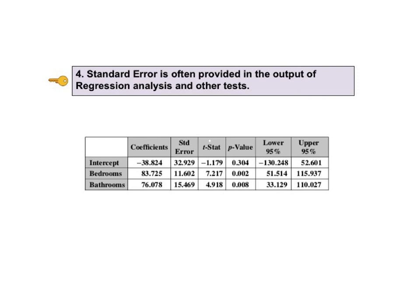In this output from a regression analysis, the standard error in the third column is the standard deviation of the three variables in the first column, intercept, bedroom, and bathrooms. Now the standard error here may be of interest to some, but the deciding information in the regression analysis is in the p-value or in the 95% confidence interval.